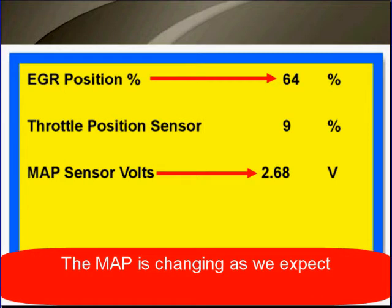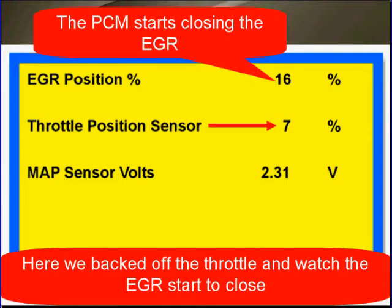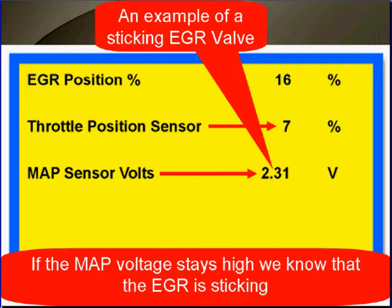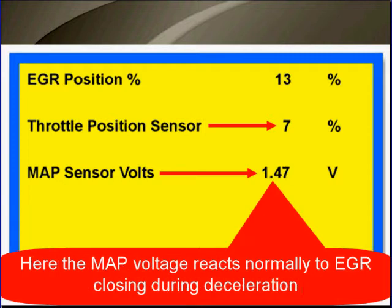We're seeing the effects of a normal EGR flow. The MAP is changing just as we expected it to. At cruising speeds, we won't see major changes in MAP voltage. Here we backed off the throttle and watched the EGR as it started to close. The PCM is going to start closing the EGR. Here's an example of a sticking EGR valve — if the MAP voltage stays high, we know that the EGR is sticking. When the EGR closes, this is what we expect to see in MAP voltage changes. Here the MAP voltage reacts normally to the EGR closing during deceleration.